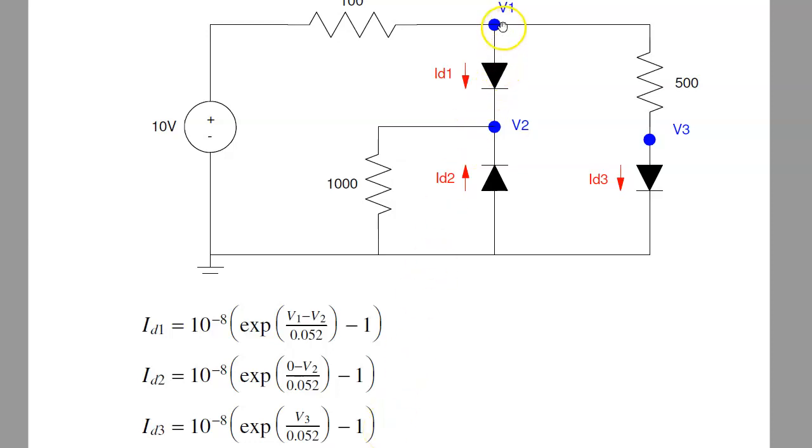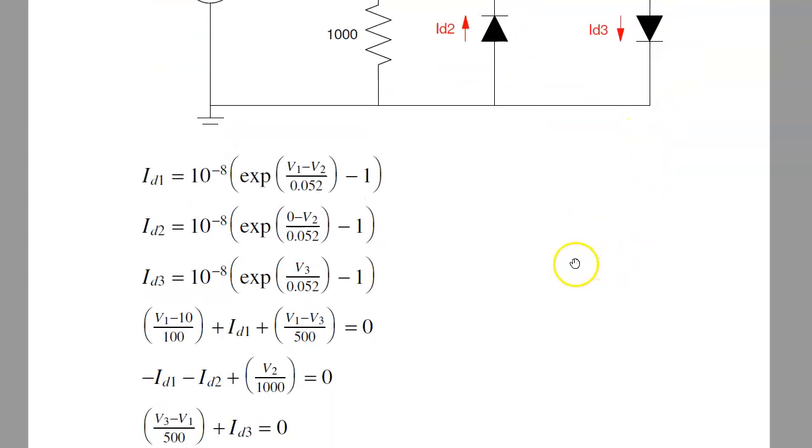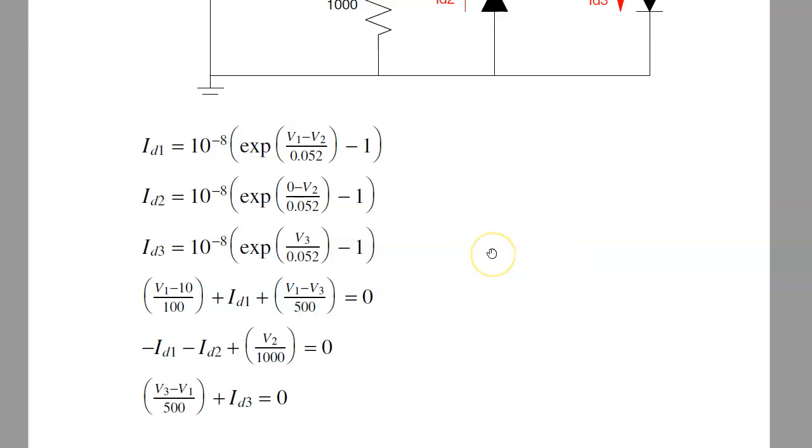Then your voltage node equations. Current left, V1 minus 10 over 100, plus the current down, plus ID1, plus the current down, V1 minus V3 over 500 equals 0. At node 2, minus ID1 plus ID2 plus V2 over 1000 equals 0. Node 3, V3 minus V1 over 500 plus ID3 equals 0. Gives you six equations, six unknowns.